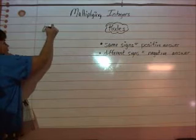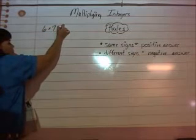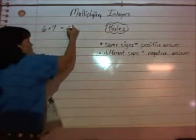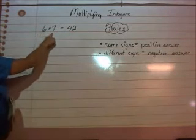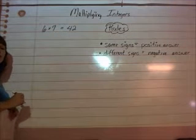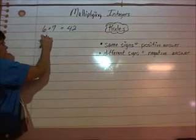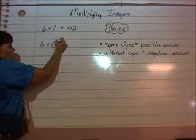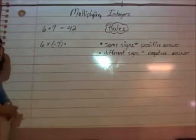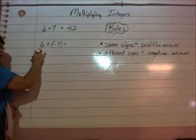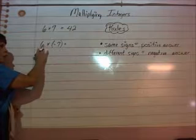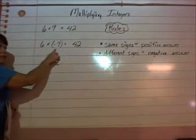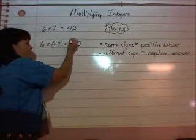If you have 6 times 7, most of us know that — that's pretty easy. 42. They were both positive, so you get a positive answer. Now let's take one of those and say 6 times negative 7. This time you have a positive and a negative, so the answer is still going to be 42, but because the signs are different, we're going to have a negative answer.